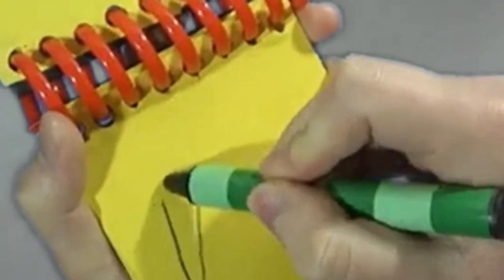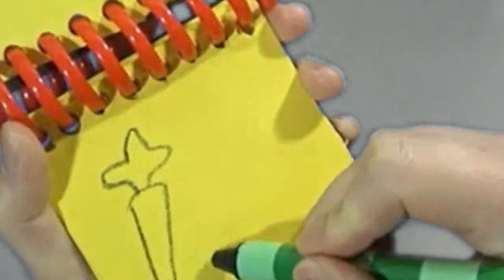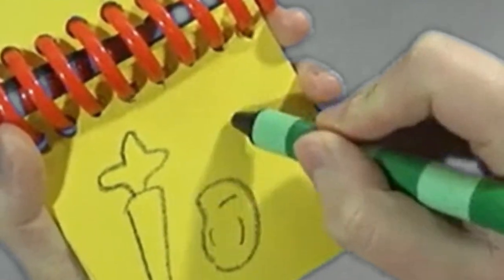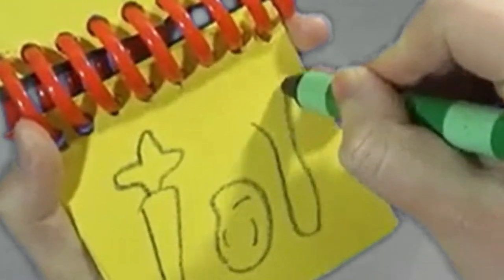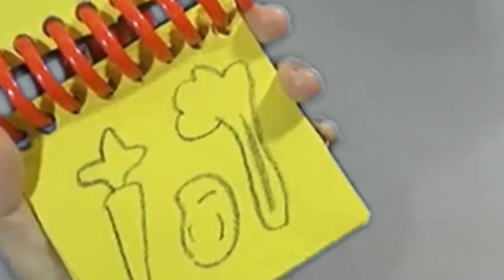You know what we need! Our handy dandy notebook! Right! Okay! So, let's write down these vegetables! A carrot with green stuff on top! A potato with eyes! And a celery stick with some lines! And there! Vegetables!